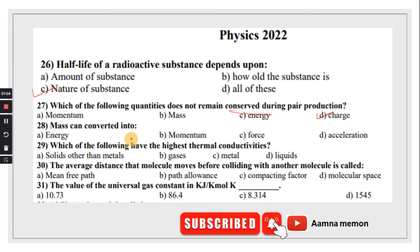Mass can be converted into energy. Which of the following have the highest thermal conductivity? Thermal conductivity is more in metals. The average distance that molecule moves before colliding with another molecule is called mean free path. The value of the universal gas constant is 8.314 kilojoules per kilomole. Option C is correct. Ability to do work is the definition of energy.